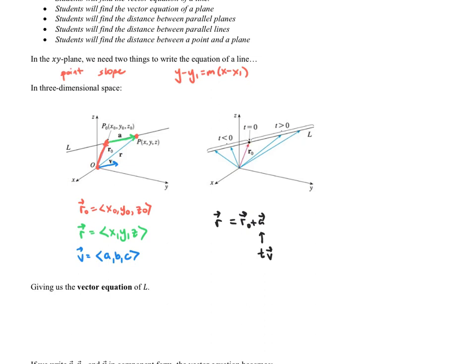If t equals zero, we have zero times v, meaning we have just the initial r sub zero vector. If t equals one, we move in the direction of v with a scale of one and get a point on the line. If t equals two, we travel twice as far along v. We can also do t equals 1.5, 0.8, and so forth, getting all these points. We could also let t be negative, giving us points on the other side — t equals negative one, negative two, and so on. What we get is a huge number of points forming this line in space.